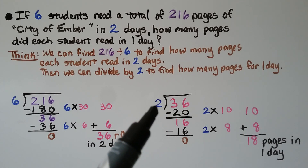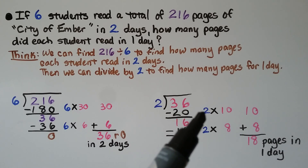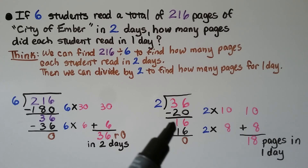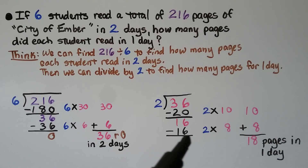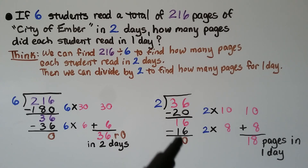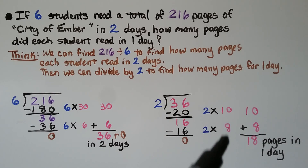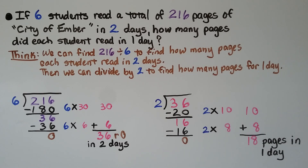We divide 36 by 2 to find pages for one day. We do 2 times 10, which is 20. We subtract and get 16. Then 2 times 8 is 16 — subtract it and get 0. We add our partial quotients, and that's 18 pages for each student for one day.